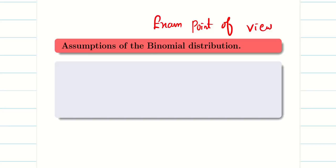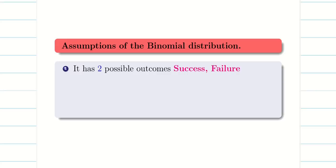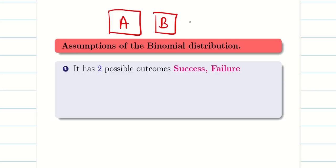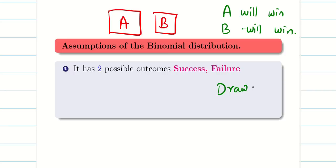We need to understand the assumptions of binomial distribution. If these assumptions are satisfied, we can apply binomial. First, it should have only 2 possible outcomes: success and failure. For example, binomial cannot be applied for a cricket match because there can be 3 outcomes — A wins, B wins, or a draw. Since there are 3 different outcomes, binomial distribution cannot be applied to cricket.